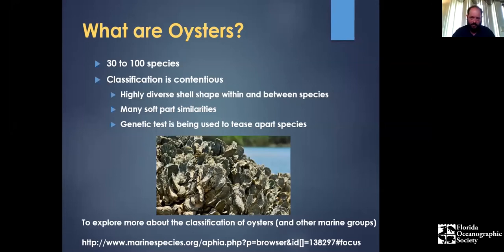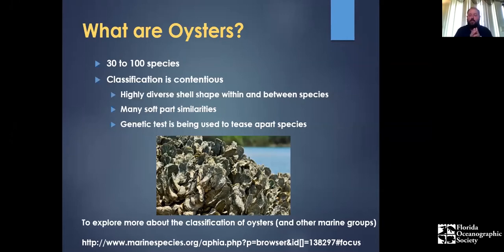A lot of classification is done by shell shape, color, size, and ridges, but that leads to difficulties. Oysters change how they grow their shell based on the conditions they're growing in — a sparse environment produces a different shell than when oysters are densely clustered. With dense packing, many species grow much thinner and taller. If predators are around, some species make thicker shells with more ridges. This diversity within a species makes it really difficult to distinguish species morphologically, so genetic tests are increasingly being used.